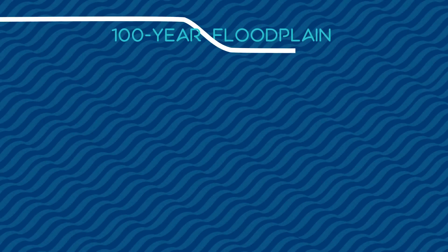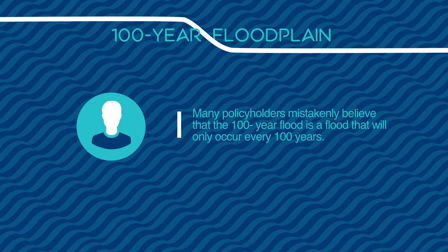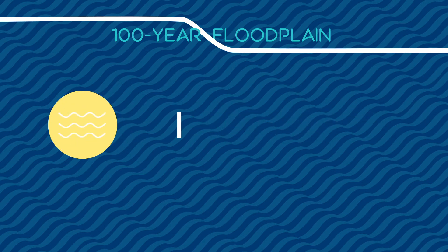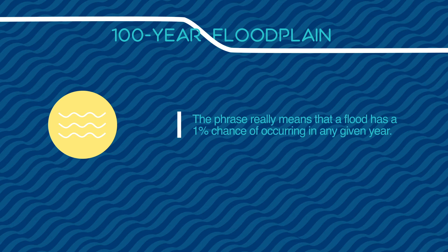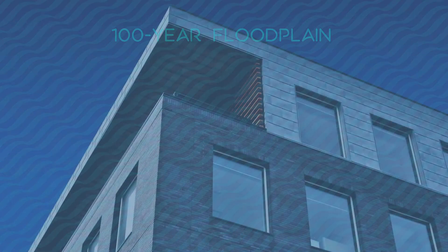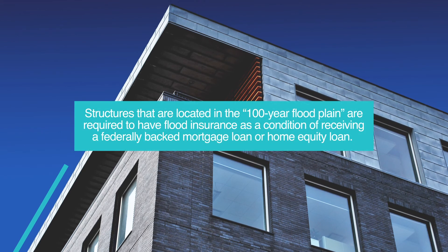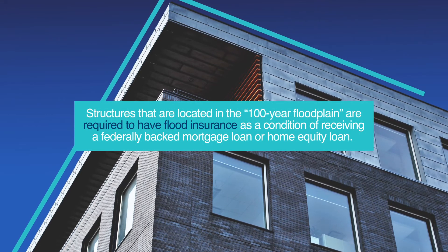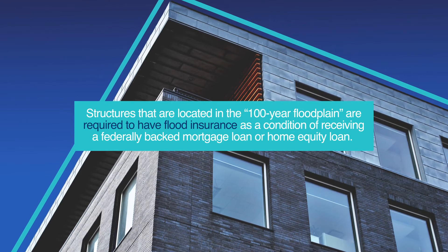The use of the phrase '100-year flood floodplain' has caused a great deal of confusion over the years. Many policyholders mistakenly believe that the 100-year flood is a flood that will only occur every 100 years. However, the phrase means something else entirely — it means that a flood has a 1% chance of occurring in any given year. Structures located in the 100-year floodplain are required to have flood insurance as a condition of receiving a federally backed mortgage loan or home equity loan.